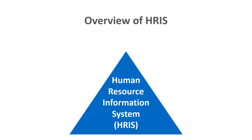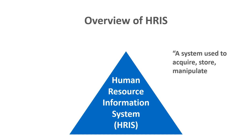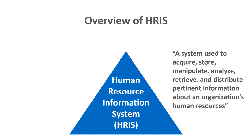So what is an HRIS? A human resource information system can be defined as a system used to acquire, store, manipulate, analyze, retrieve, and distribute pertinent information about an organization's human resources. This quote comes directly from an article published in 1990 by Tannenbaum in the Journal of Systems Management. Despite its age, this definition has been quoted many times in the decades that followed and today remains a very current definition.